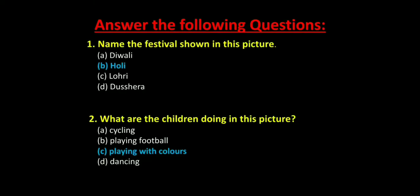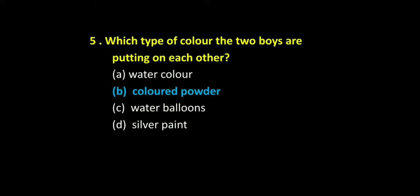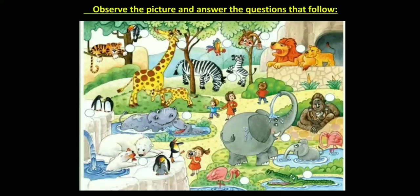Question 1: Name the festival shown in this picture — the answer is Holi. Question 2: What are the children doing? — the answer is playing with colors. Question 3: How many girls are seen in this picture? Question 4: What is the blue-dressed girl holding in her hand? — the answer is water gun. Question 5: Which type of color are the two boys putting on each other? — the answer is colored powder.